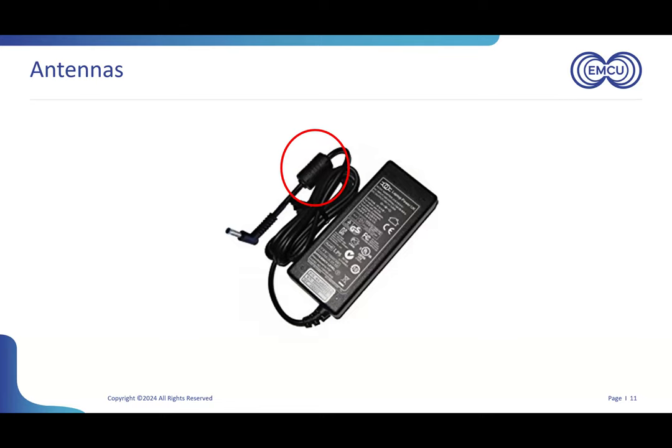So one of the things we're really going to talk about in this presentation is: how do things like this happen? Where can you spot them, and how can you fix these problems in the design phase so that you don't end up adding cost, schedule, weight, and redesigns at the very end of your product life cycle?